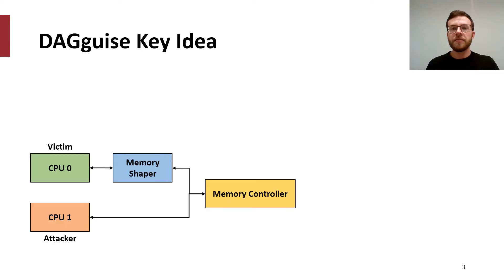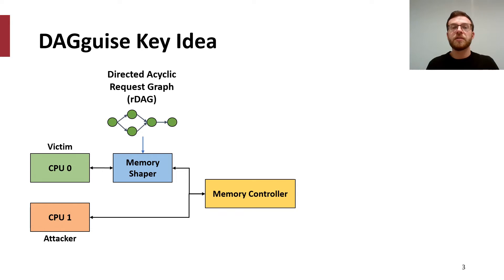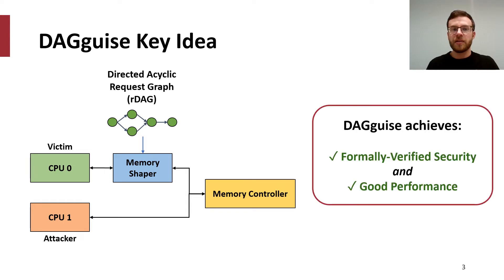At a high level, we introduce a memory shaper to shape requests to a representation called a directed acyclic request graph, something we call an RDAG. The shaper uses this representation to shape the timing of the victim's memory requests to a secret-independent pattern. By doing so, our mitigation scheme, called DAG-Eyes, is the first scheme to achieve formally verified security while allowing for dynamic traffic contention and good performance.